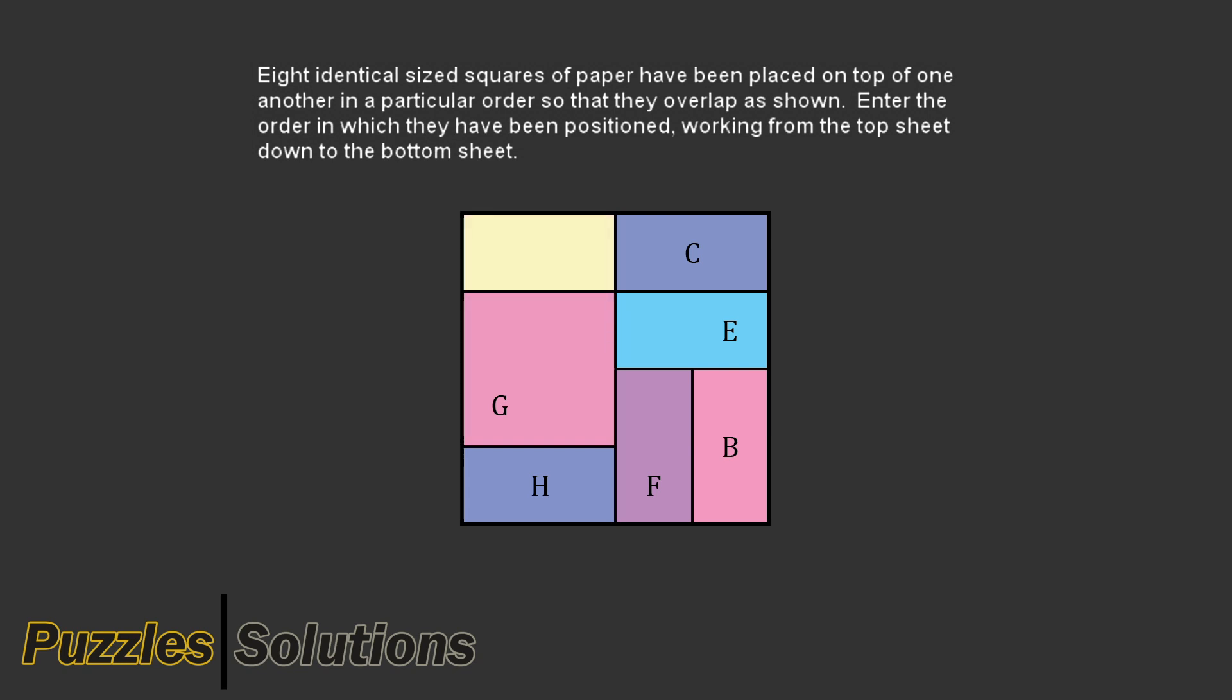Under G there is only H. Under H there is only F. Now under F there is both E and B. But removing F can't reveal all of E, meaning that removing F has to reveal all of B.